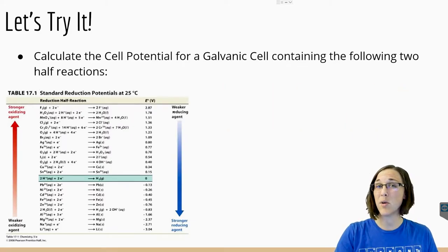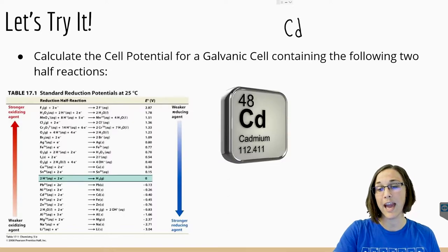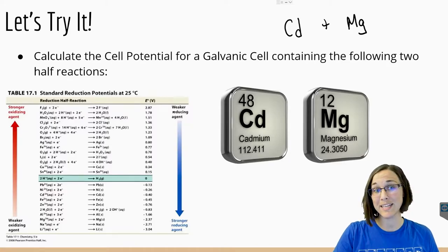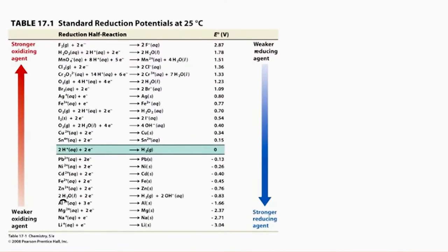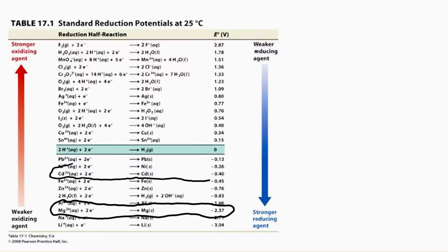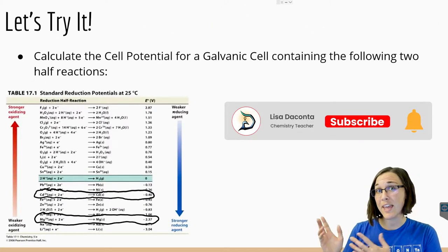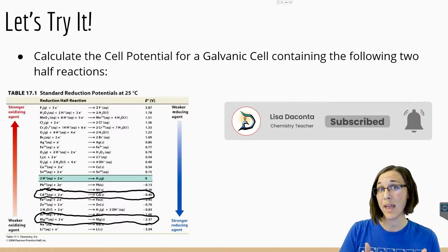If we wanted to know how much voltage could be produced between a reaction of cadmium and magnesium, we could look up the half reaction for cadmium and magnesium in a standard reduction potential table — here for magnesium and here for cadmium. Looking over to our table, we can see what the half reaction voltage would be for both cadmium and for magnesium.